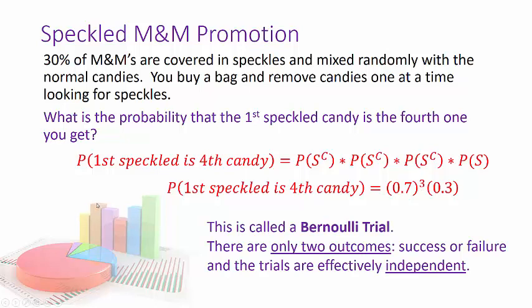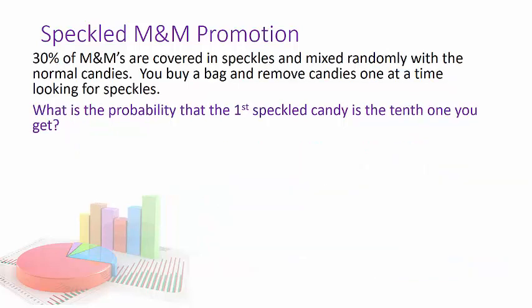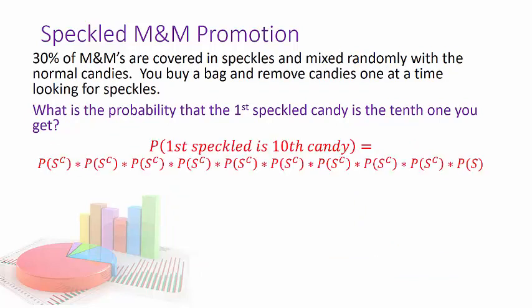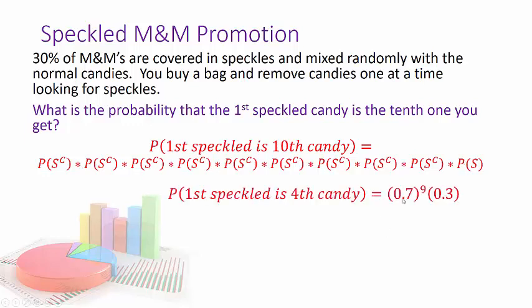This is called a Bernoulli trial because there are only two outcomes — success or failure — and the trials are effectively independent; the next M&M doesn't depend on the first M&M. What's the probability it will be the tenth one? That could be lengthy — you'd write 'complement' nine times and then the tenth one is a success.